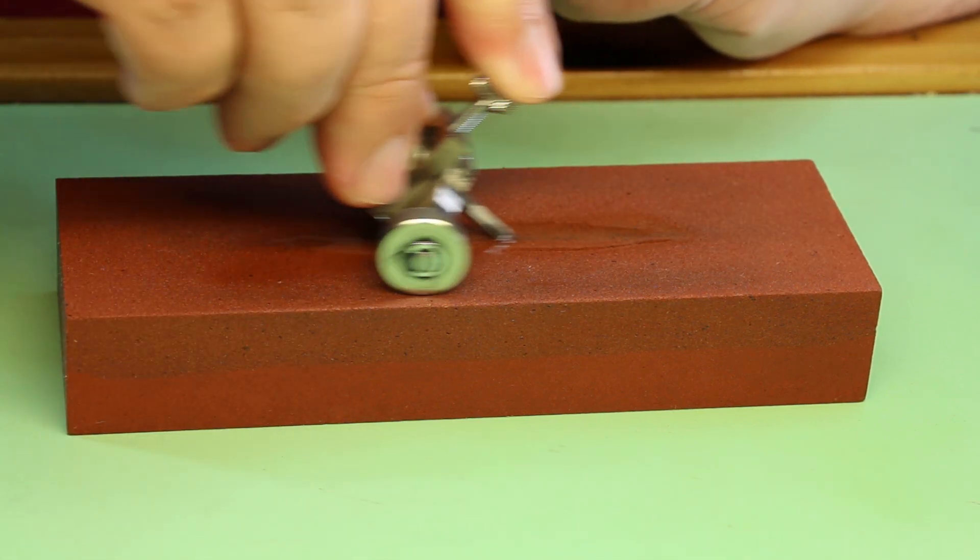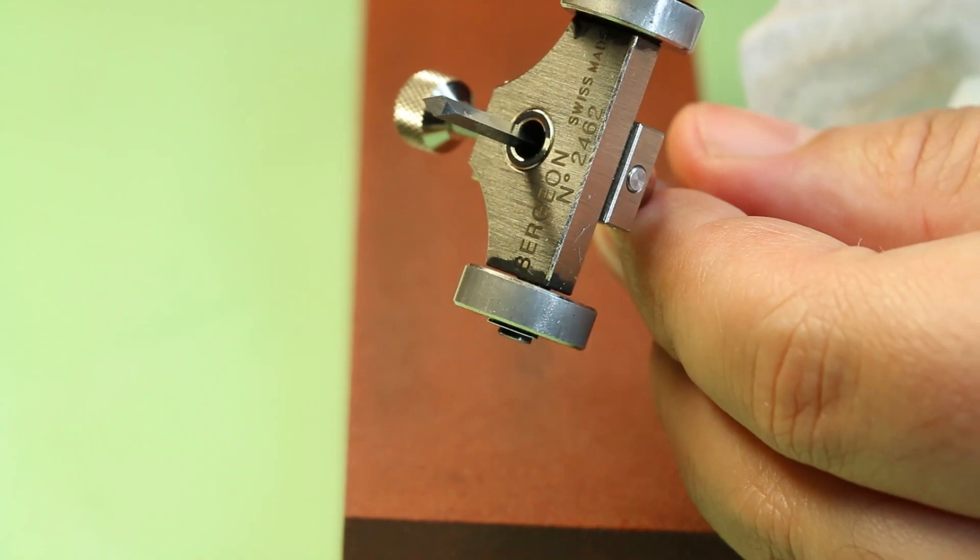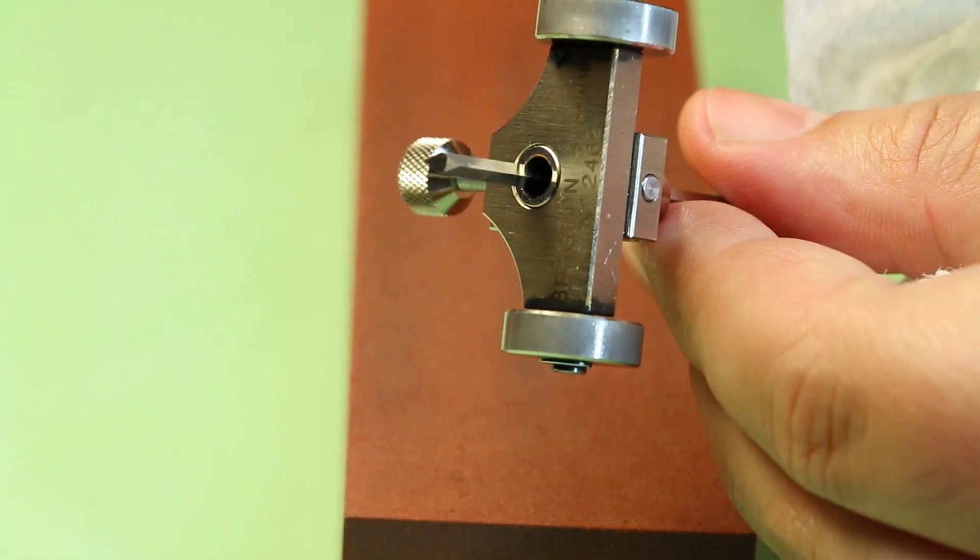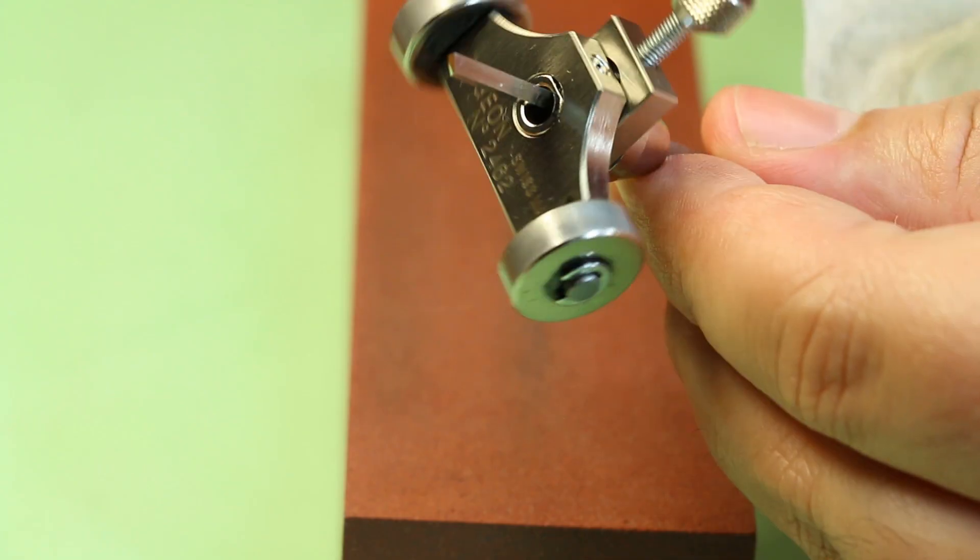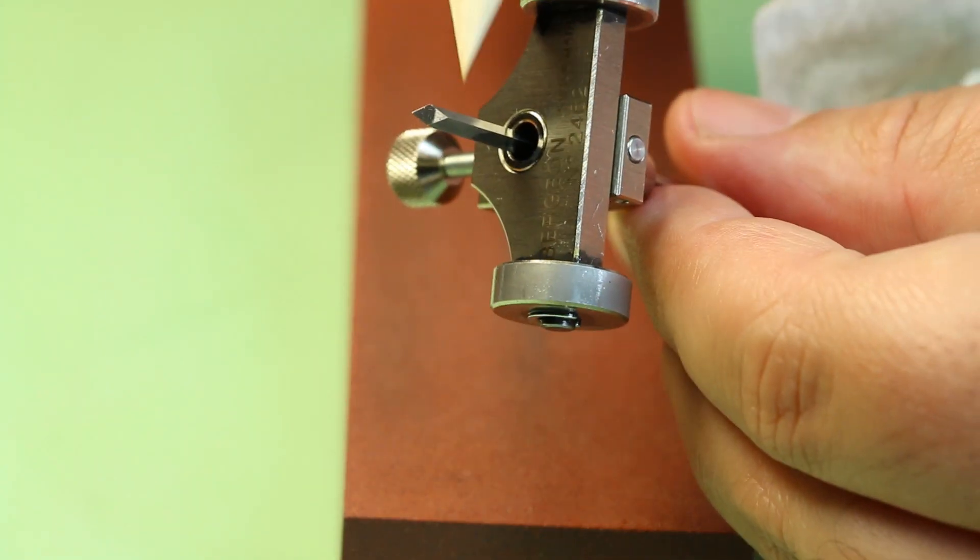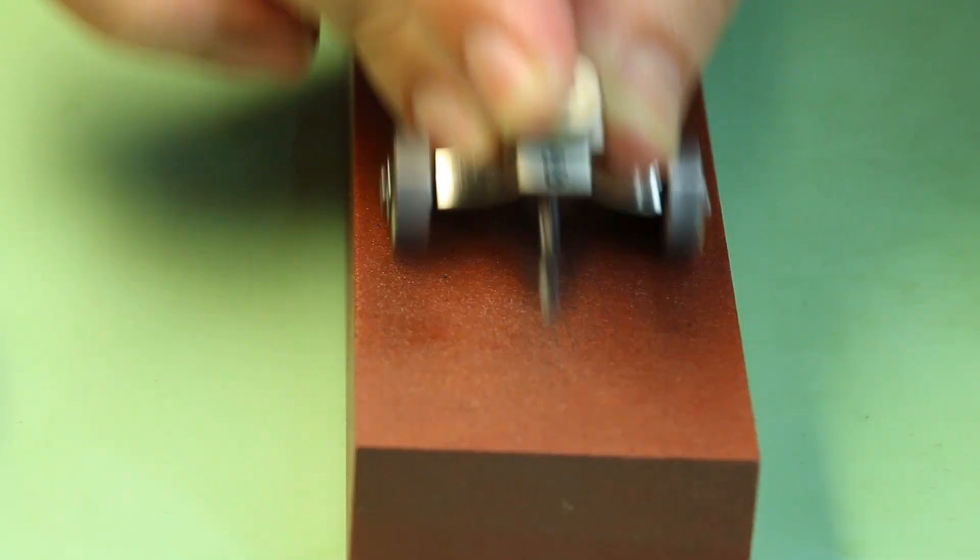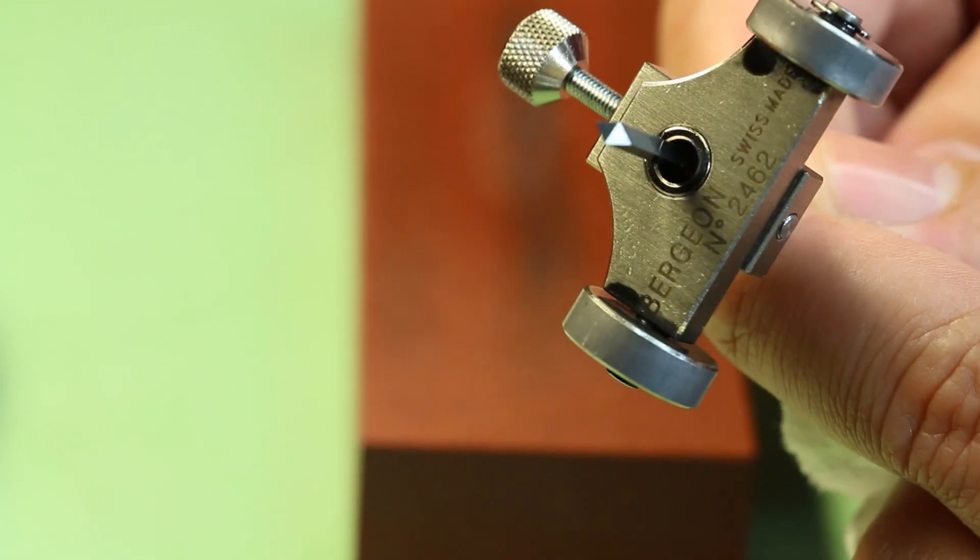And then we apply some oil to the stone and start to sharpen our graver. This graver is the 45 degree graver. So here you can see our new face being formed at the bottom of the diamond. It's always important to stop and check your work as you're going along to ensure that the diamond is perfectly symmetrical. And if need be, just make some fine adjustments and continue sharpening.